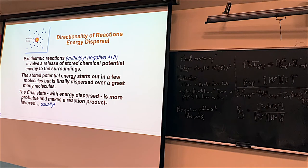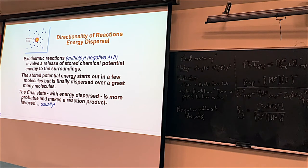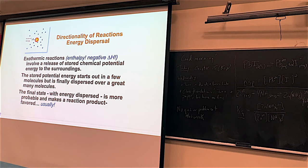Exothermic reactions are programmed to happen because energy is being released — negative delta H. The potential energy, concentrated in just a few molecules before the reaction, is released as the reaction proceeds. That energy goes not only to the new product molecules but also to solvent or air molecules — the surroundings. Chemists call those the surroundings. Energy goes from the system to the surroundings. More energy dispersed means a more probable, product-favored reaction.